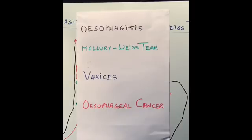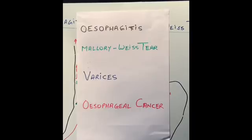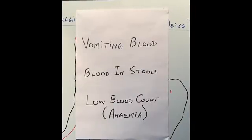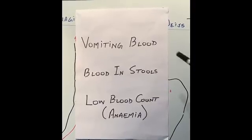The second thing bleeding depends on is how fast the bleeding is — whether it's slow, medium, or very fast. If the bleeding is very slow, the patient presents differently. If it's medium, the presentation is a bit different. If it's very fast, the symptoms and the way blood comes out are again very different. There are three main ways a patient will present to the hospital.